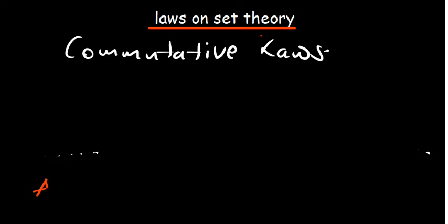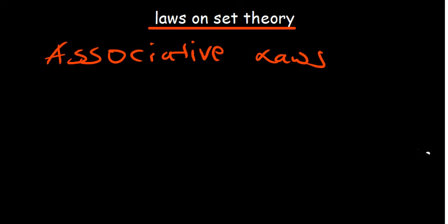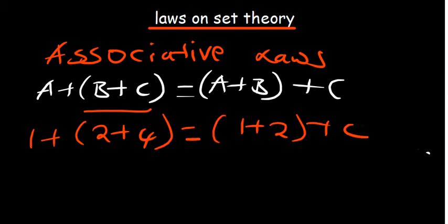Another law related to commutative laws is associative laws. Associative laws differ from commutative laws because they apply to three different things. In addition: A + (B + C) is the same as (A + B) + C. For example, 1 + (2 + 4) gives 1 + 6 = 7, while (1 + 2) + 4 gives 3 + 4 = 7 — same result, different steps.